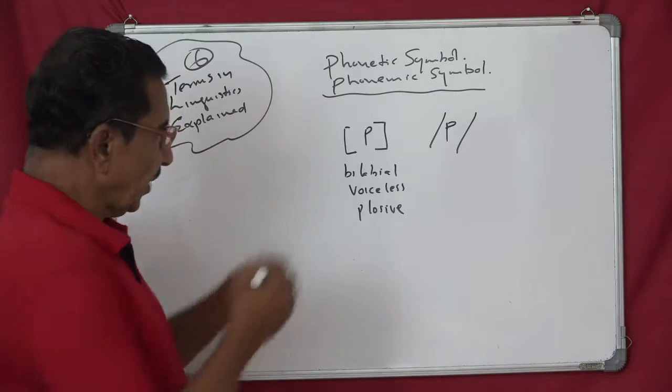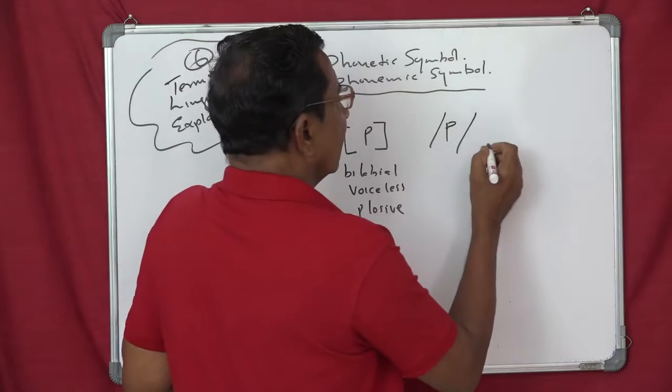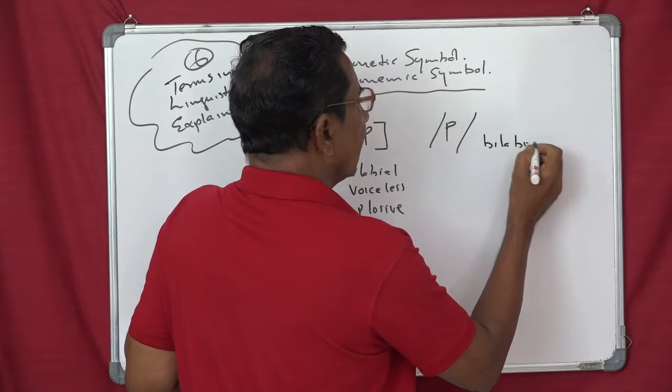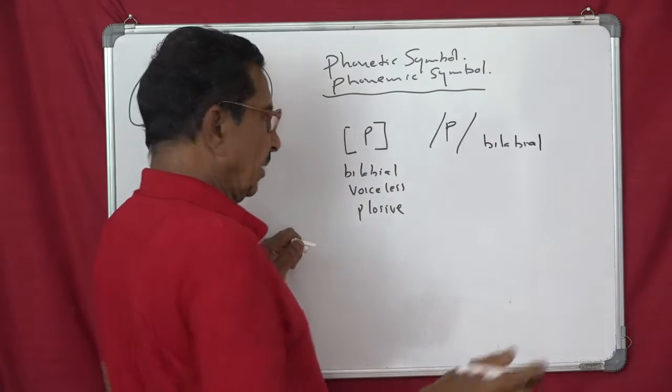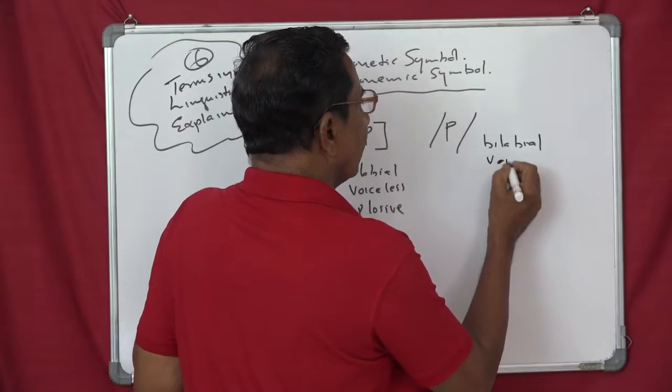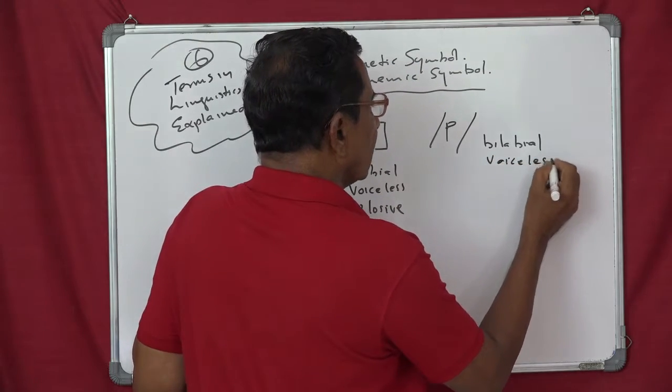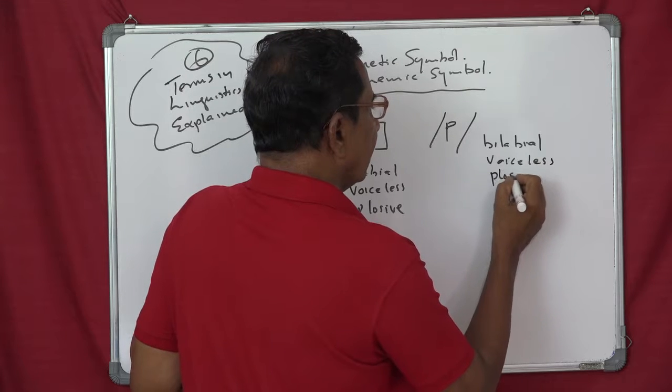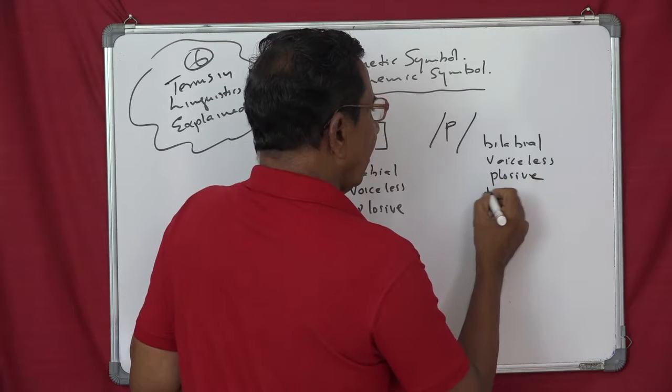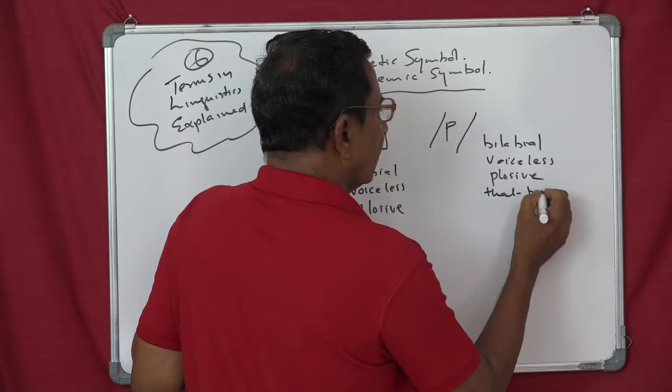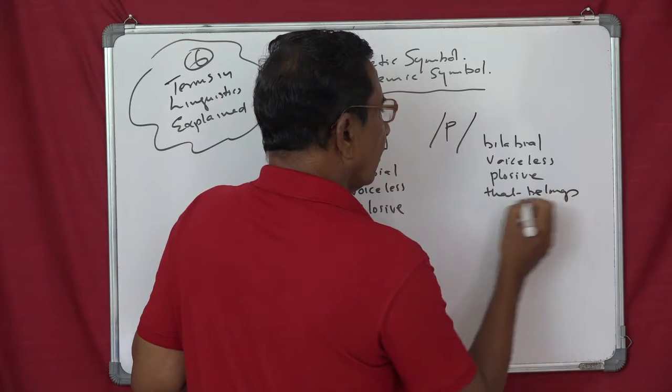But if you write like this, this means, a bilabial, bilabial, I suppose you know, both lips. Bilabial, voiceless, voiceless plosive. That's all.